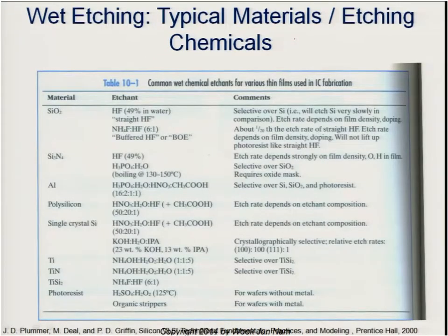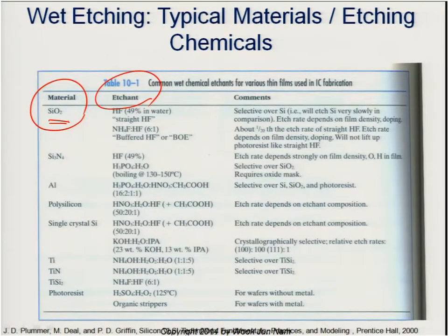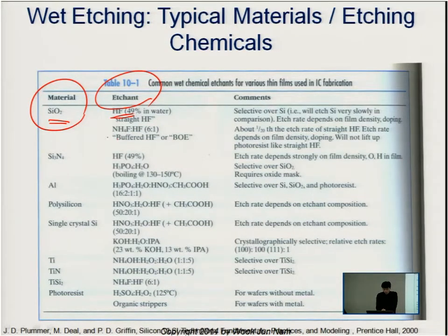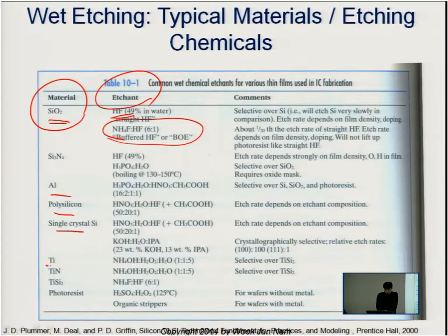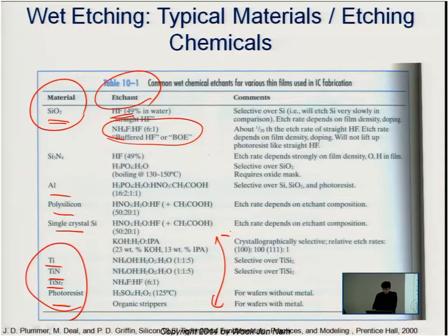Here is an example of materials and their etchants. For silicon dioxide, hydrofluoric acid or a mixture of chemicals is used for etching. Depending on the material, there are different chemicals used.